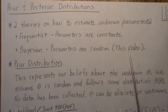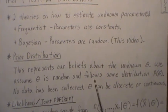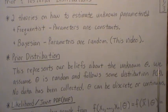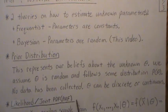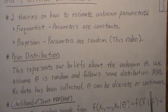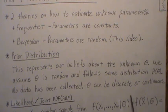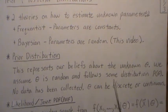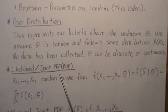This video focuses on Bayesian analysis. A prior distribution represents our beliefs about the unknown parameter theta. Remember, theta is random so it follows a distribution. No data has been collected at this point. Theta can be discrete or continuous, but we have to assume it follows some sort of distribution. There are techniques like non-informative priors and flat priors on how to develop this prior, but you have to have a prior belief.